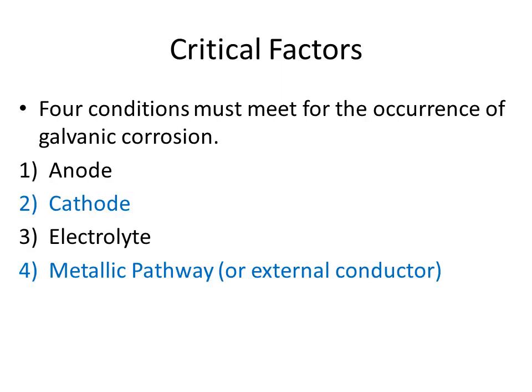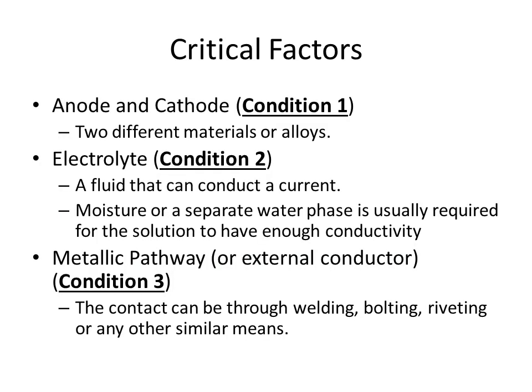Critical factors: four conditions must be met for galvanic corrosion to occur — anode, cathode, electrolyte, and a metallic pathway or external conductor. In the context of API 571, the presence of anode and cathode is considered a single condition, so three conditions are needed: (1) anode and cathode — two different materials or alloys acting as anode and cathode; (2) electrolyte — a fluid that can conduct current, where moisture or a separate water phase is usually required for sufficient conductivity; (3) metallic pathway or external conductor — the contact can be through welding, bolting, riveting, or any other similar means.